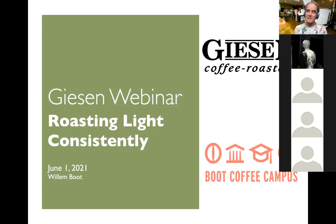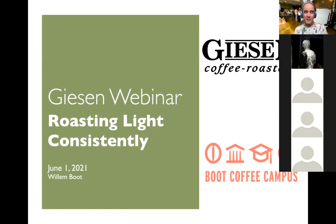Since the early start of specialty coffee — I would say with the second wave — we've seen that roasting colors started to become very dark. This was with the birth of companies like Peet's Coffee and Starbucks in their early rise, and from the 1990s on, dark roasts did become kind of a hallmark feature of the second wave of specialty coffee.